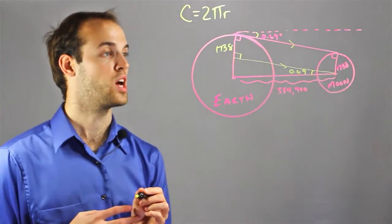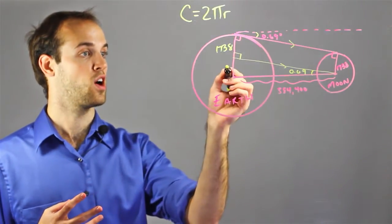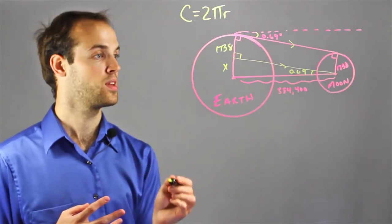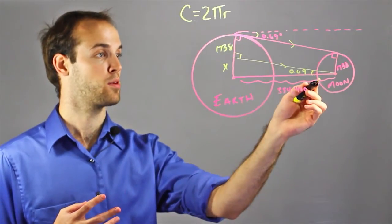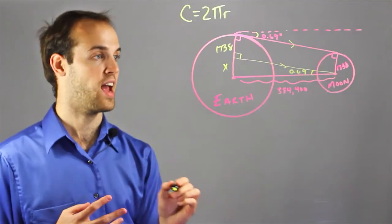And now I can use a trig function to solve for x right here. Because I have the hypotenuse of my right triangle, and I have the side that I want, and I have an angle.